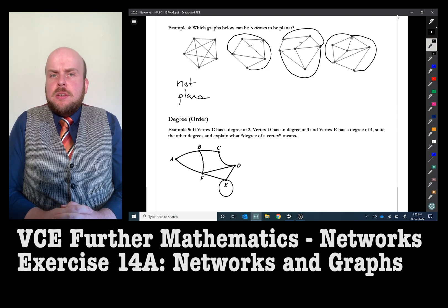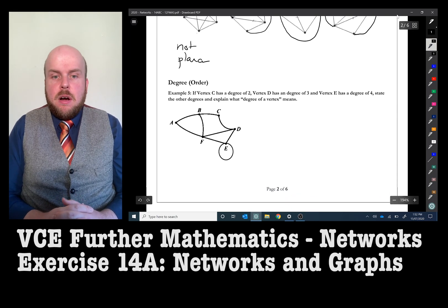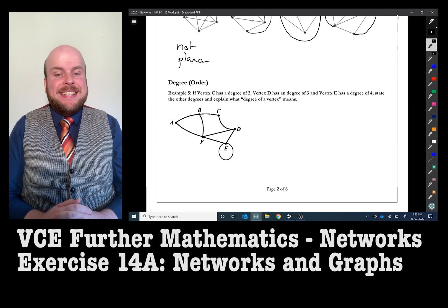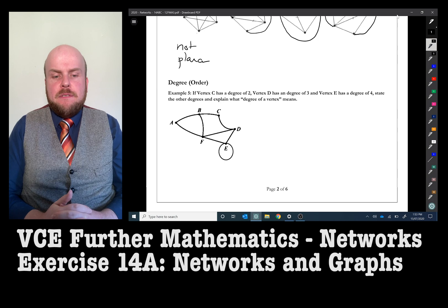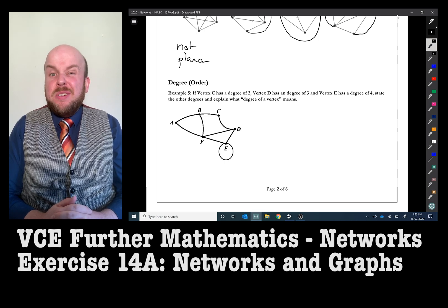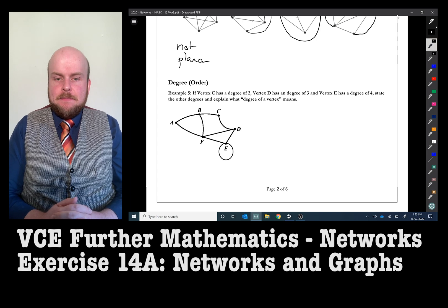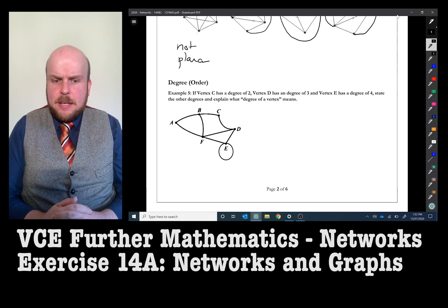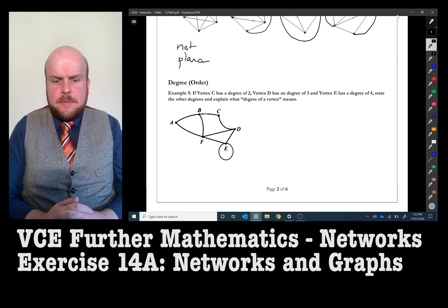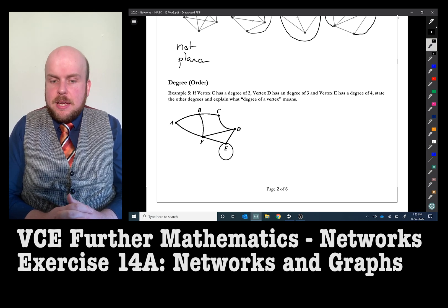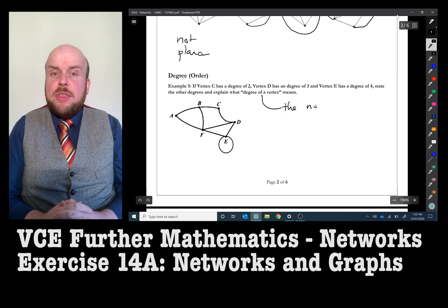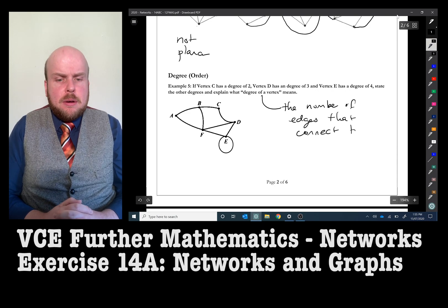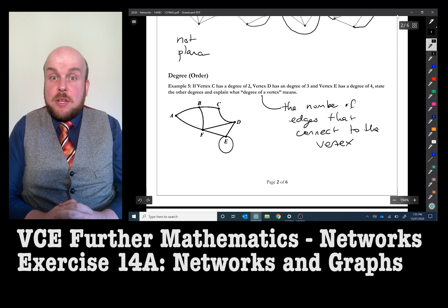Degrees. To determine the order or degree of a vertex, I have asked this problem. If vertex C has a degree of 2, vertex D has a degree of 3, and vertex E has a degree of 4, state the other degrees and explain what degree of a vertex means. Let's have a look at vertex C. It has a degree of 2. It also has 2 edges going to it. Vertex D has a degree of 3, so therefore, let's have a look at it. It's got 3 edges connecting to it. Now, vertex E has a degree of 4, but it only has 3 edges connecting to it because one of them is a loop.